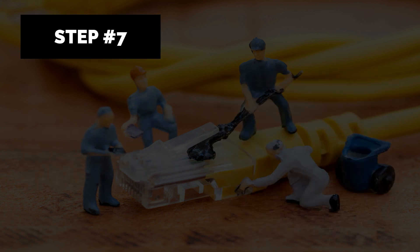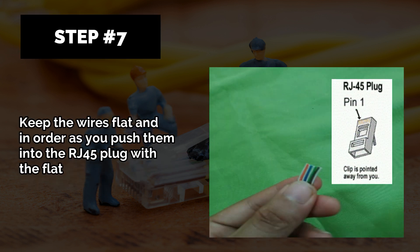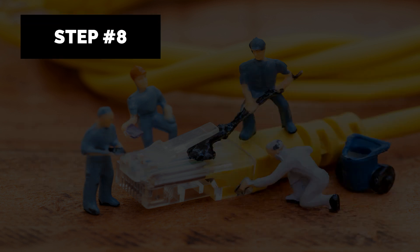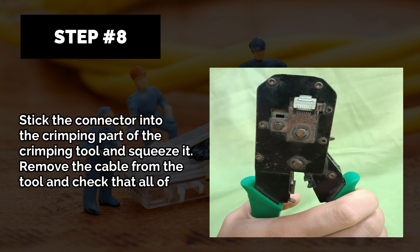Step seven: keep the wires flat and in order as you push them into the RJ-45 plug, with the flat surface of the plug on top. Step eight: stick the connector into the crimping part of the crimping tool and squeeze it. Remove the cable from the tool and check that all of the pins are down.